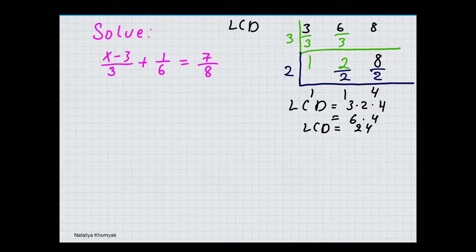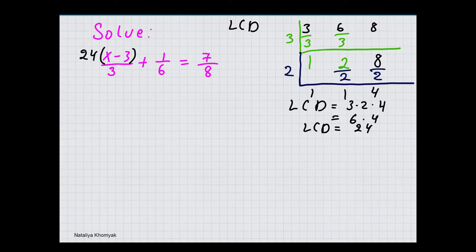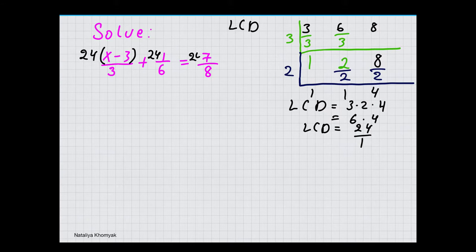I have a subtraction in one of the numerators, so I am going to put parentheses around it. And I am going to multiply each term by 24. 24 is a whole number — it is out of 1, so it is only going to be multiplying numerators.